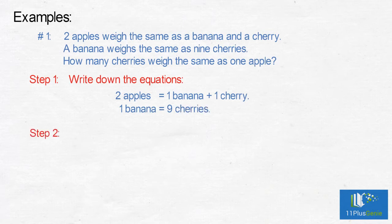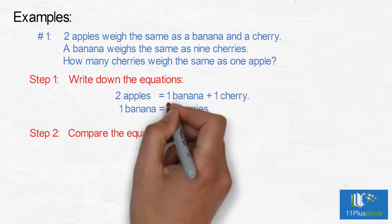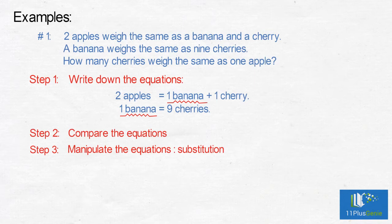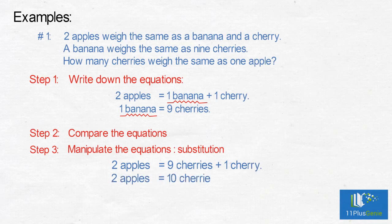If we look for similarities between the two statements, we can see that both of them contain one banana. We can use substitution — substituting the one banana in the first equation with nine cherries. Two apples equals nine cherries plus one cherry, so two apples equals ten cherries, and one apple equals five cherries.